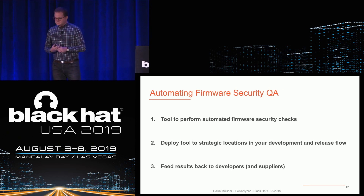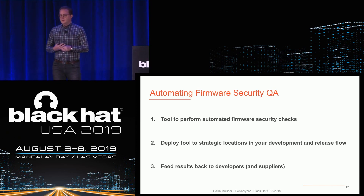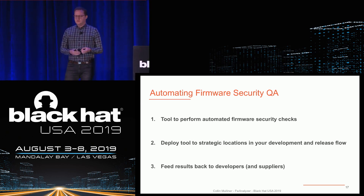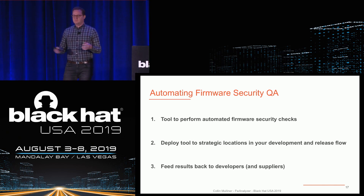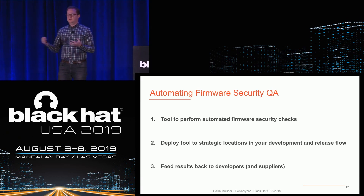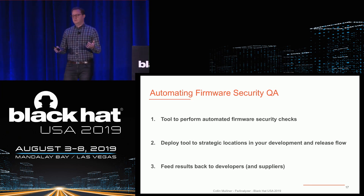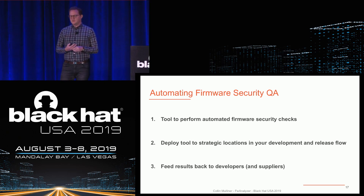It's easy to lose your reputation, and maybe you have to recall products or completely trash them — stuff like this happens, you can read about it in the media. So what do you really need to do? You have to bring in automation, because if everything changes all the time, you want something that automatically looks at your security. I really like to talk about security QA, because security is one part, but you also need to assure that your security has good quality — security and quality really go hand in hand. You need a tool you can use to automatically perform security checks and deploy it in strategic locations in your development flow, and then you need to take the results and do something with them.